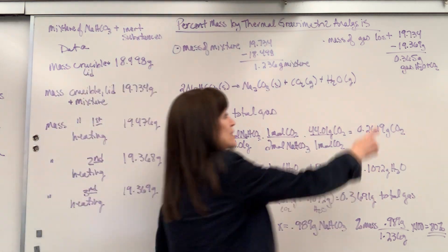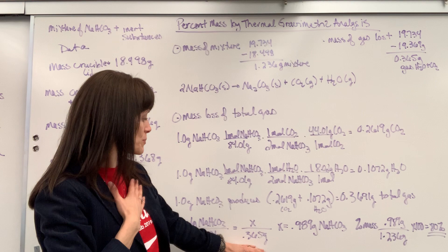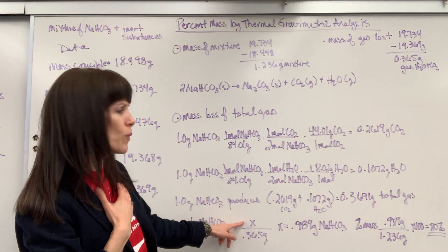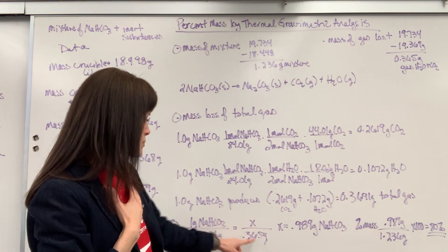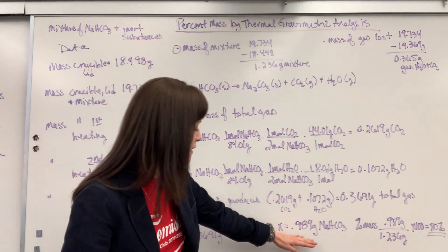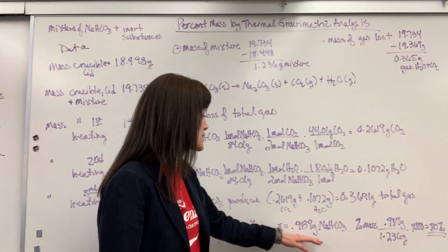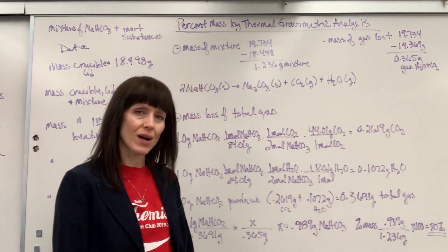Then I come over here. Well, in my situation, it released 0.365 grams. So I can just set this up as a ratio and say, what was the original mass of the sodium bicarbonate? Multiply both sides by the 0.36 and we find out that in this mixture, it contained 0.989 grams of sodium bicarbonate.